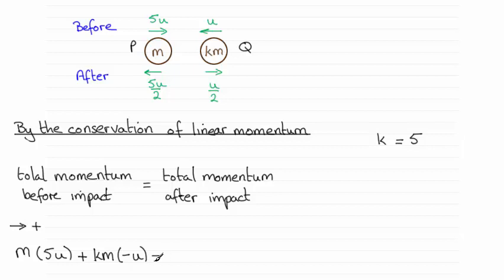Now we need to equal that to the total momentum after impact. So starting with p again, its mass is m. The speed is 5u over 2, but you can see it's going to the left in the opposite sense of my plus direction. So its velocity will be negative 5u over 2.